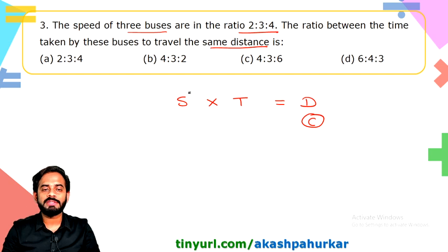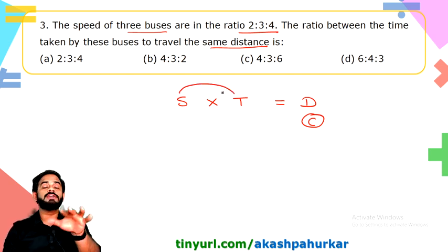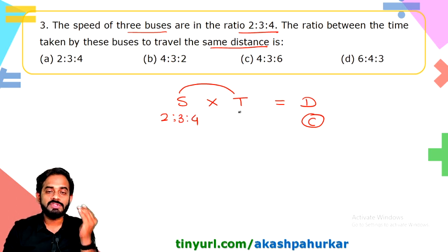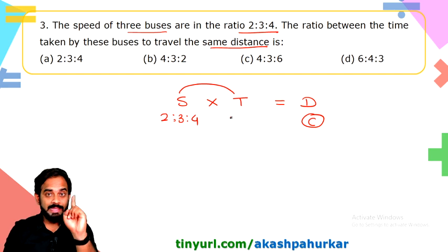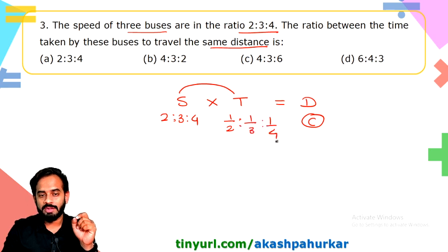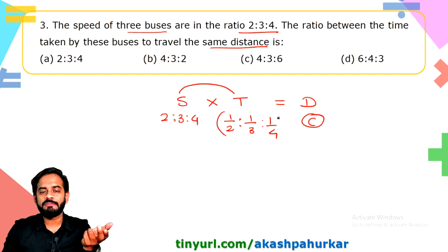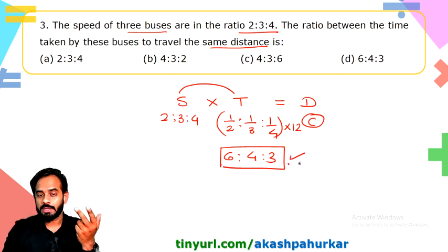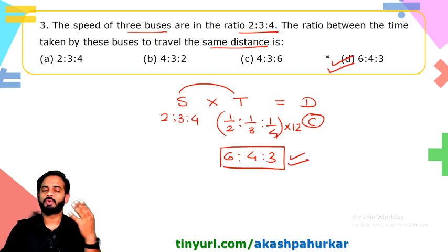Since distance is constant, speed and time are inversely proportional. Speed ratio is 2:3:4, so time ratio is 1/2 : 1/3 : 1/4. Multiply through by the LCM of denominators (12) to get 6:4:3. So option D, the ratio 6:4:3, is the correct answer.